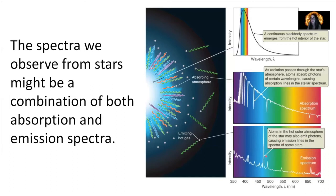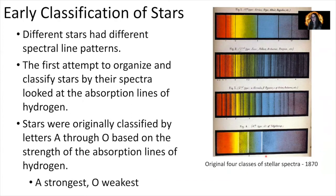Scientists began to realize in the mid to late 1800s that you could observe these patterns of spectra from stars and learn more about them — at least you could determine that some stars are like each other and some are not. Different stars have different spectral line patterns. The first attempt to organize and classify stars by their spectra looked in particular at the absorption of hydrogen. Stars were originally classified by letters A through O based on the strength of the absorption lines of hydrogen, with A having the strongest and O having the weakest.